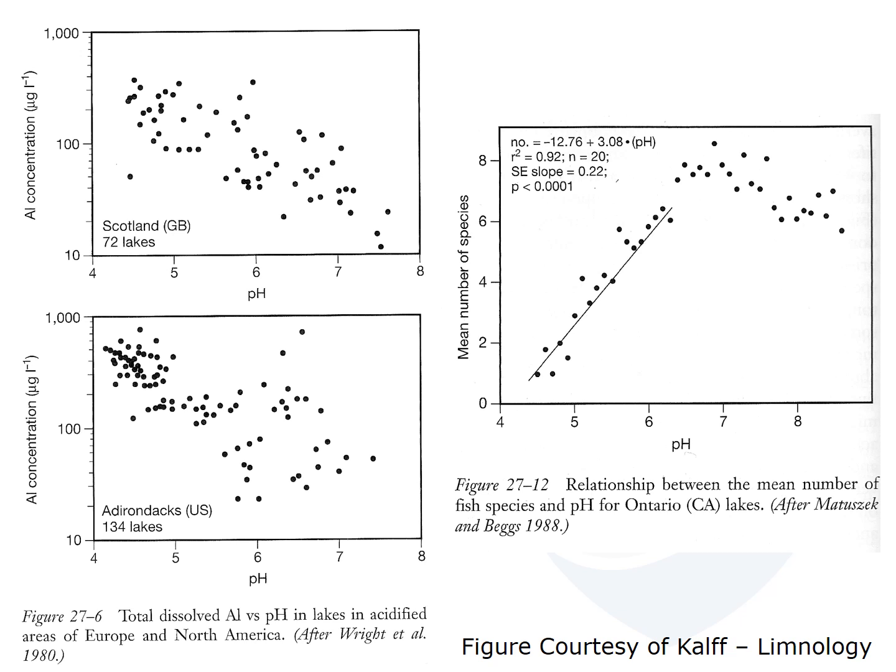Looking at the acidity of lakes in Scotland and the Adirondacks, as you increase toward a more neutral pH of 7.0, you tend to have low concentrations of aluminum. As you get more acidic, you see logarithmic increases in aluminum concentrations, which can ultimately be toxic to aquatic organisms. In Ontario lakes, another area affected by acid precipitation, at a pH of about 6.5 or higher you tend to have high numbers of species — six to eight fish species on average. As you drop the pH down to five or four, the mean number of fish species decreases dramatically, because fish are not tolerant of acidic conditions and aluminum toxicity.